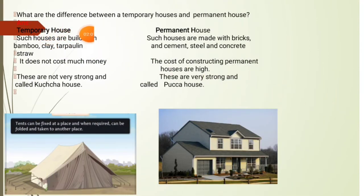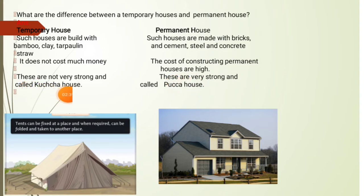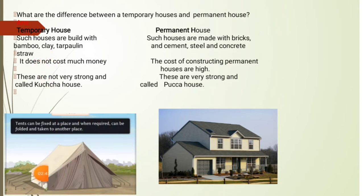Let us see the difference between temporary houses and permanent houses. Temporary houses are built with bamboo, clay, tarpaulin or straw, while permanent houses are made with bricks, cement, steel and concrete. Temporary houses do not cost much money, but permanent houses are costly to construct. Temporary houses are not very strong and are called Kaccha houses, while permanent houses are very strong and called Pakka houses. A tent and a caravan are examples of temporary houses, while concrete buildings are permanent houses.